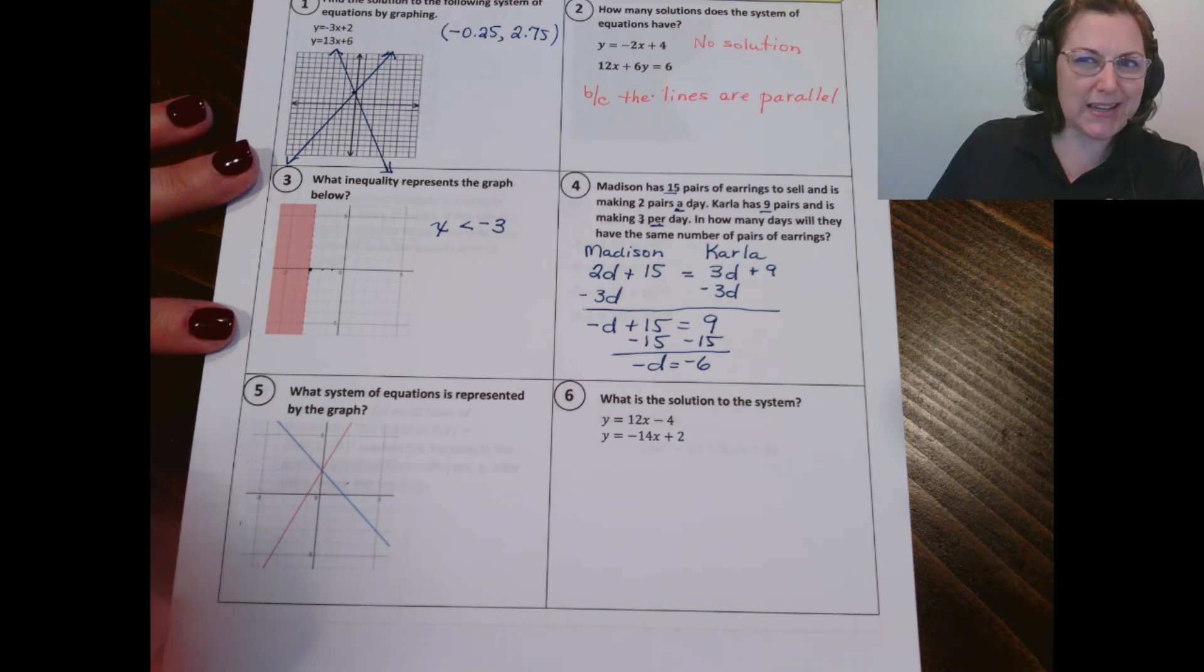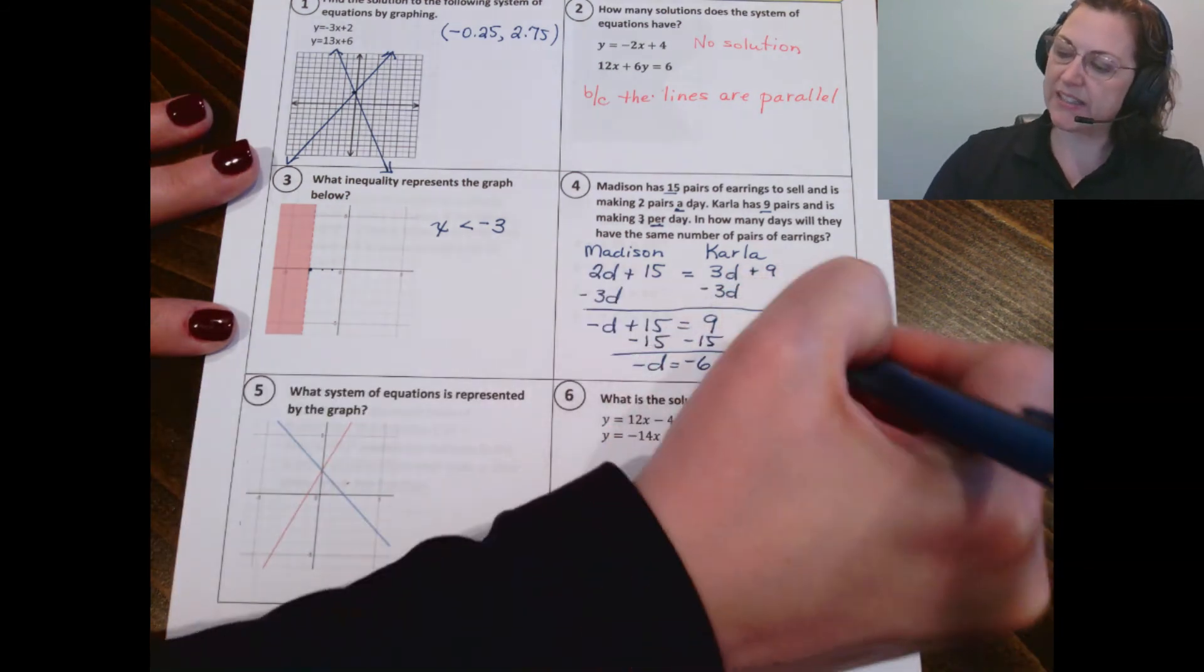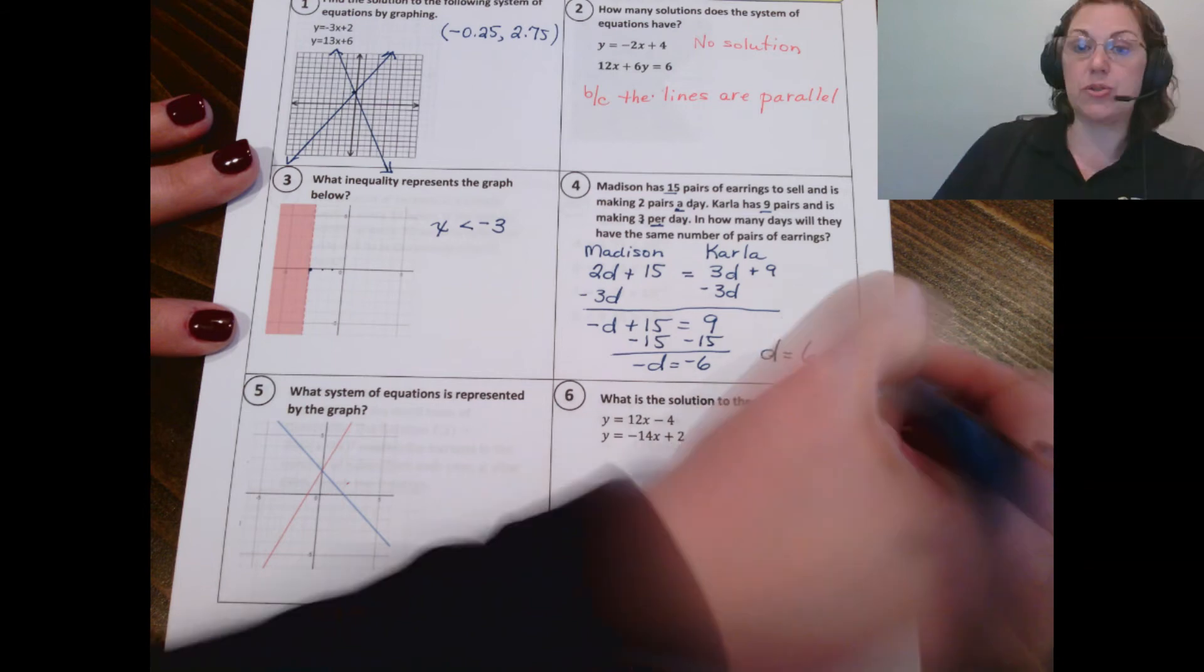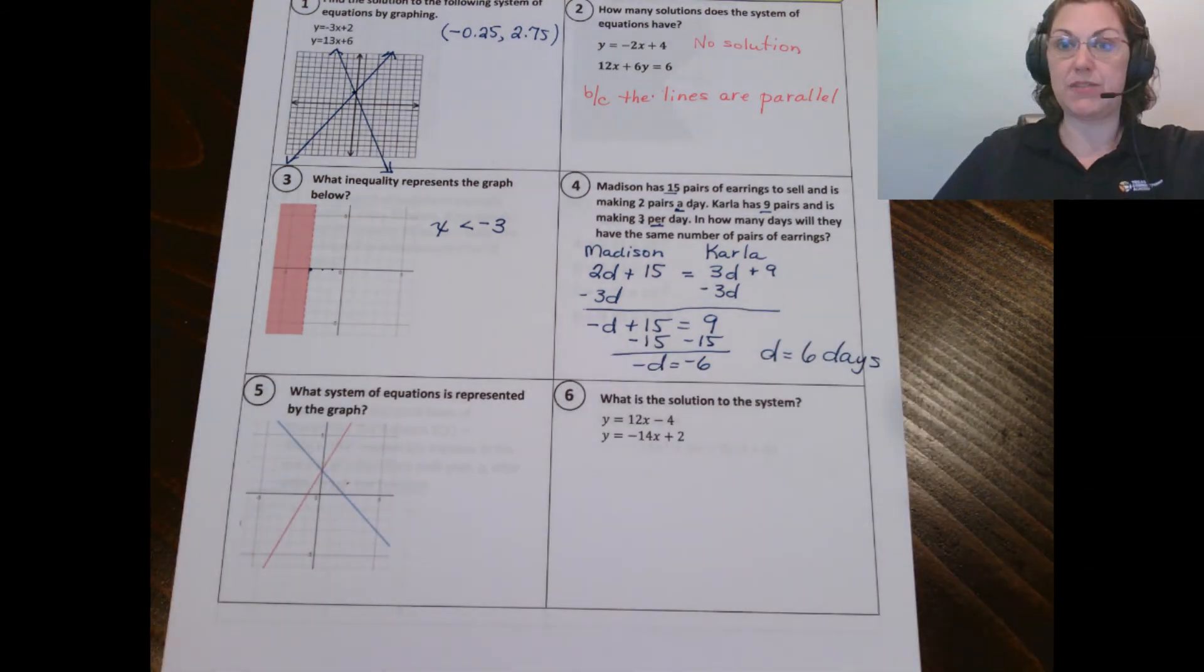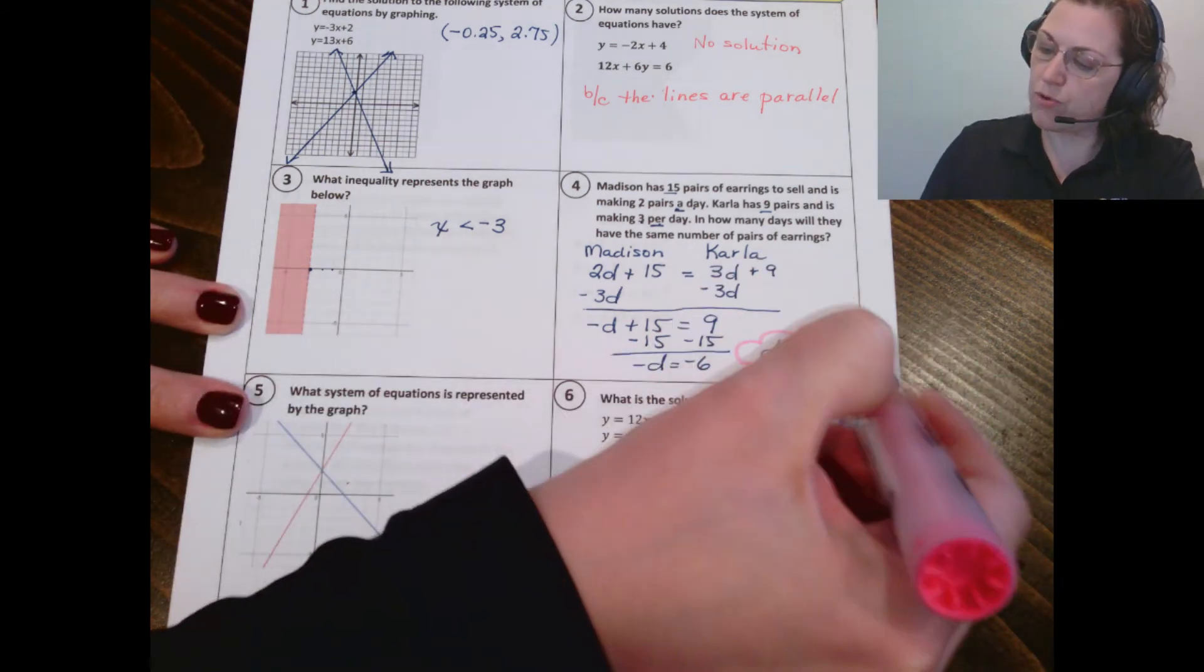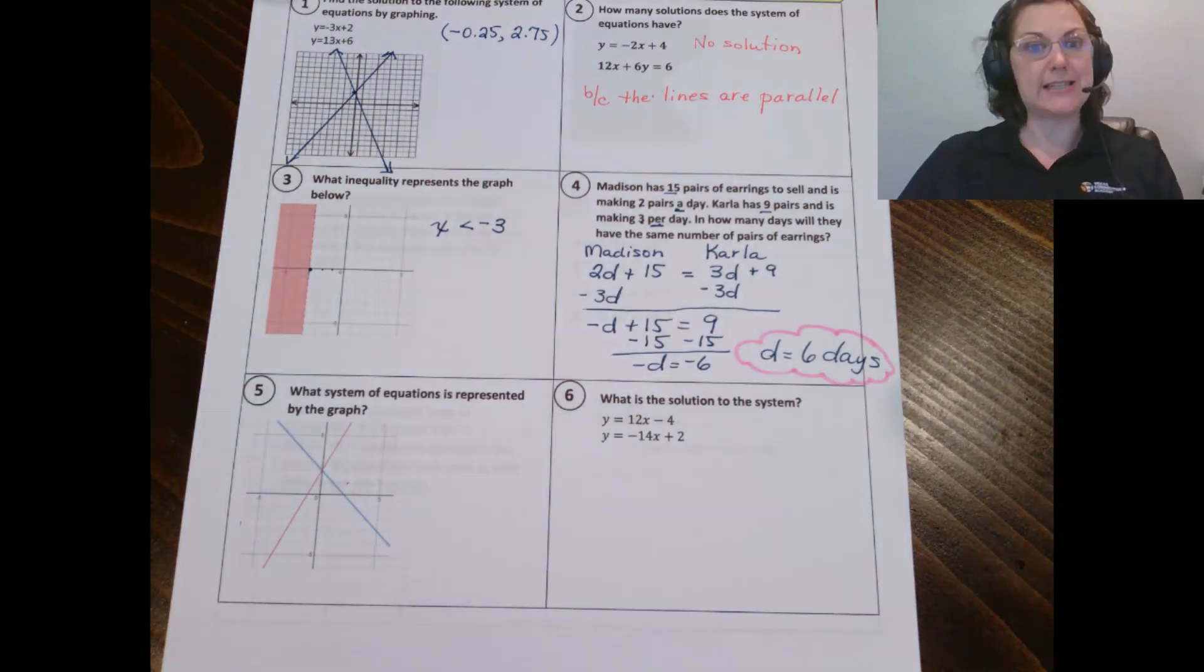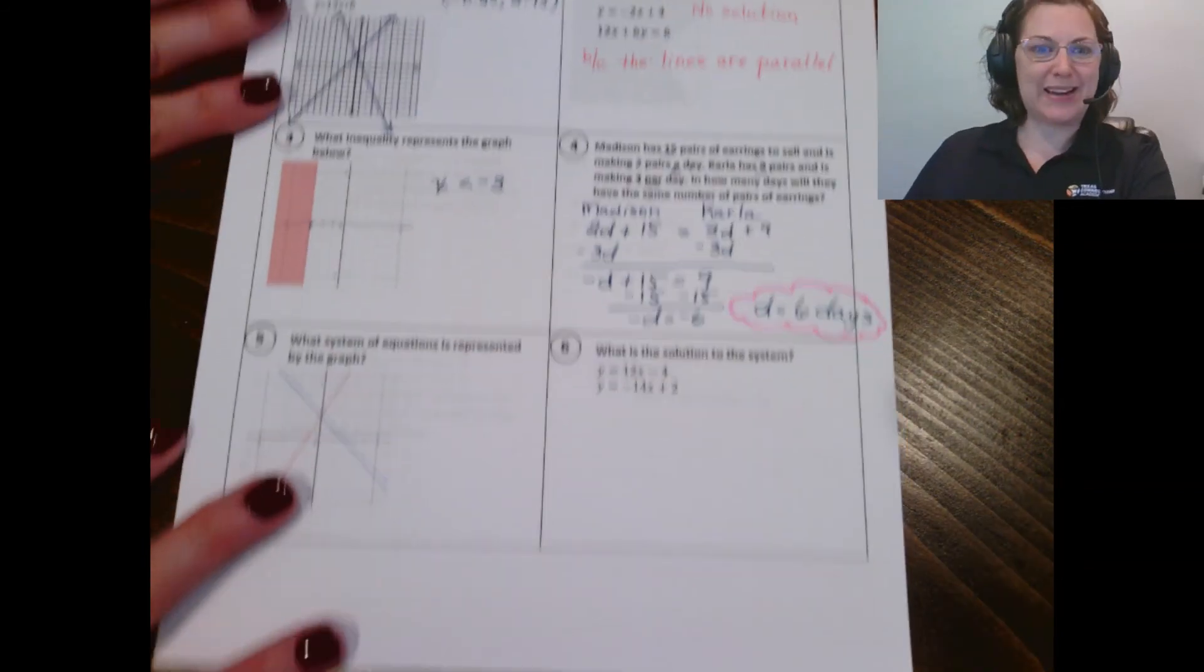If negative D equals negative six, then positive D must be six days. Just a reminder, make sure you're showing all of those steps so that you get your extra credit for the practice exam. All right. Moving along. We're doing great here.